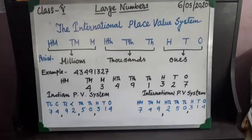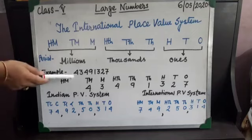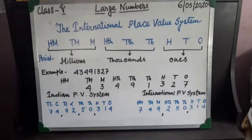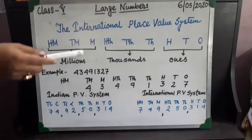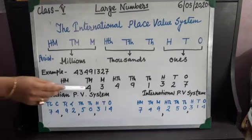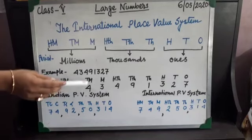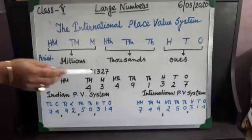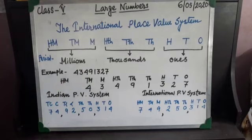Hundred thousand, ten thousand, and thousand come in the thousands period. And hundreds, tens, and ones come in the ones period. Here I have given you a number to place into the international place value system, and according to that, the number becomes 43,491,327.